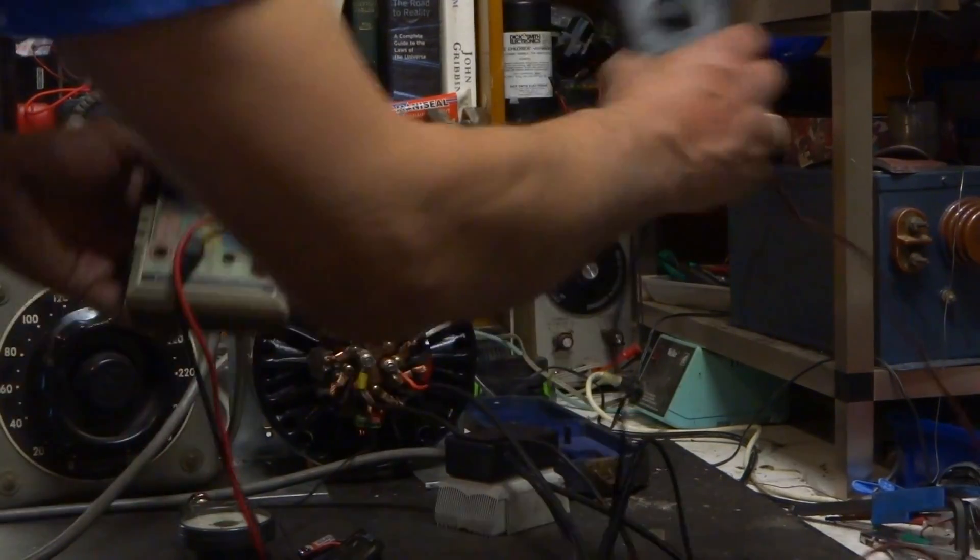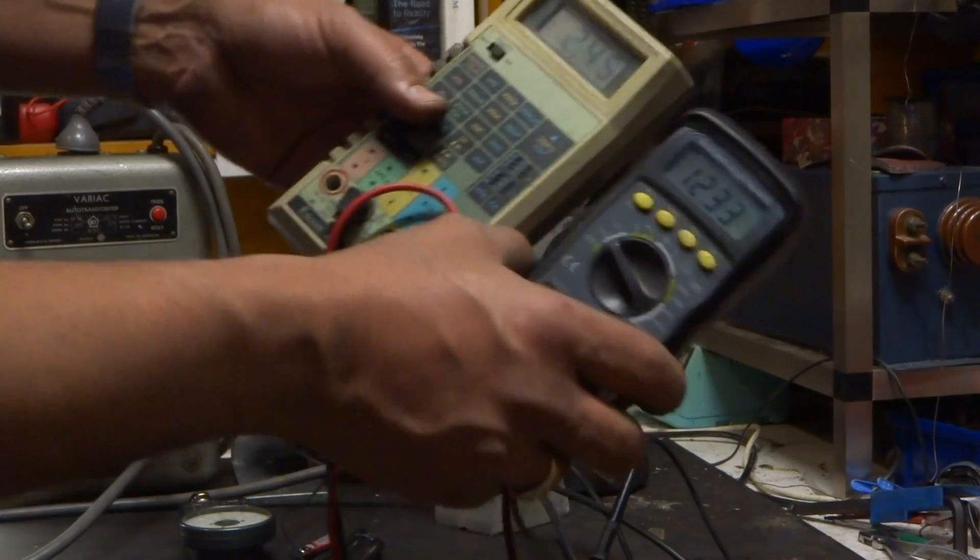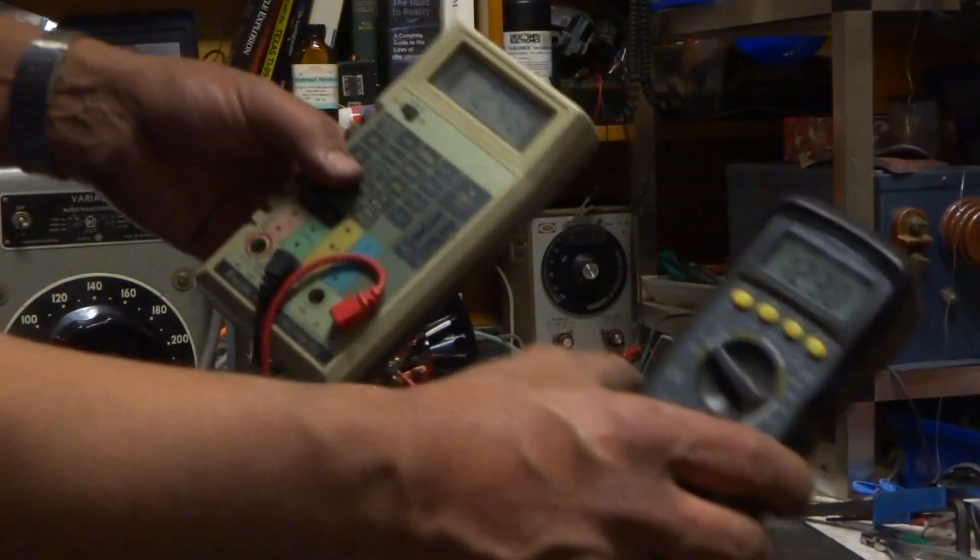So, compared to the Joztec motor, which was drawing kind of 6 amps or more at 12 volts, this is more like what the Agni should be drawing, 2.4 amps at 12 volts.